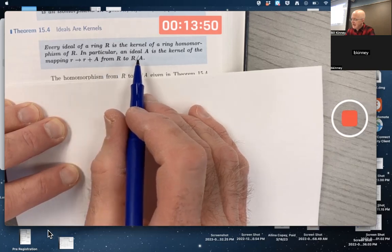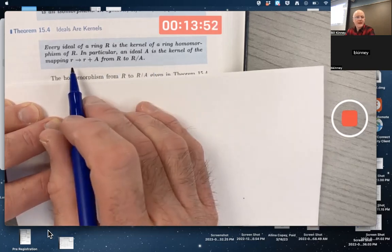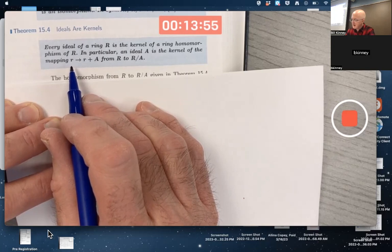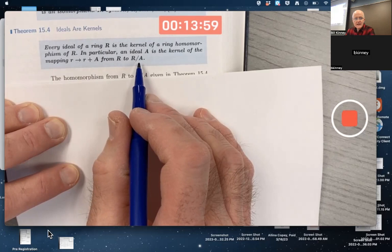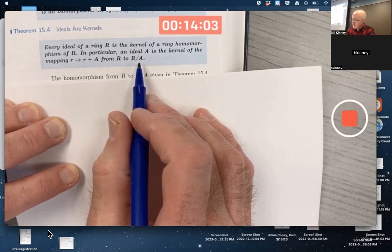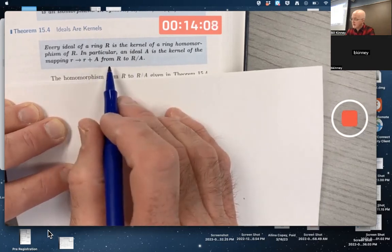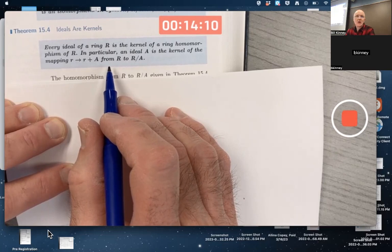In particular, an ideal A is the kernel of the mapping that sends your arbitrary ring element of capital R to the left coset R plus A in the factor group R mod A. The main thing is verifying that that mapping is a ring homomorphism and that it indeed does have a kernel equal to A. That's the goal here.